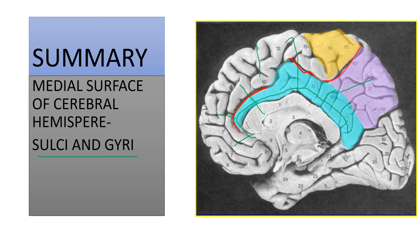For the practical exam on the medial surface of the cerebral hemisphere, you need to name six gyri: the cingulate gyrus, medial frontal gyrus, paracentral lobule, precuneus, cuneus, and lingual gyrus. We have now completed the sulci and gyri on the medial surface of the cerebral hemisphere.